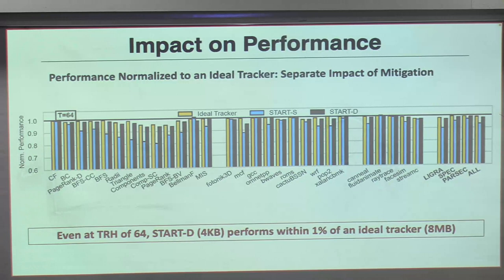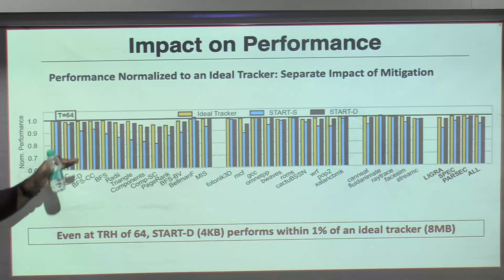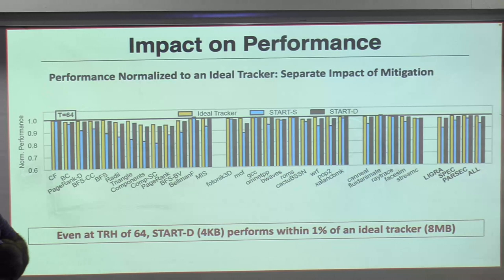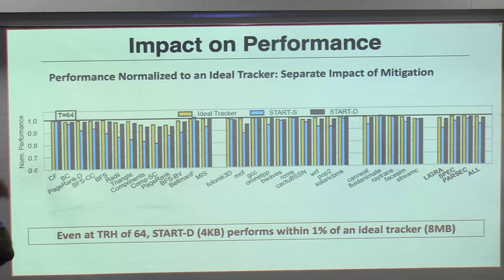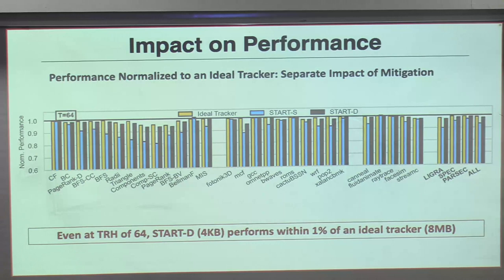Theoretically you can never solve a threshold of 1, because mitigating requires activations that themselves cause activations. There's also a nice way to handle Row Press. The objective of this work was to stop the tracking problem entirely — it doesn't matter what threshold you pick, pick whatever you want and this will work. It requires about 4 KB of dedicated storage; everything else is dynamically taken from the LLC; and performance overhead is less than 1%.